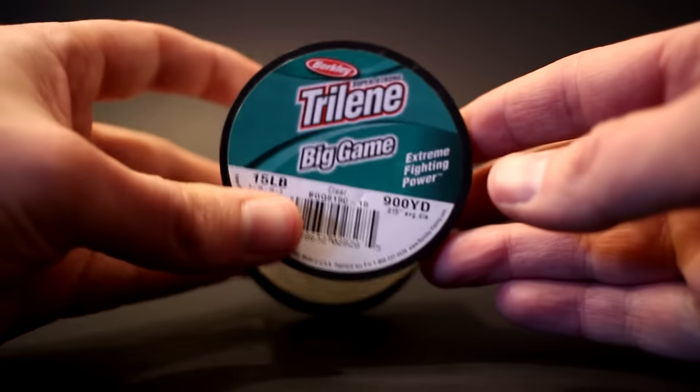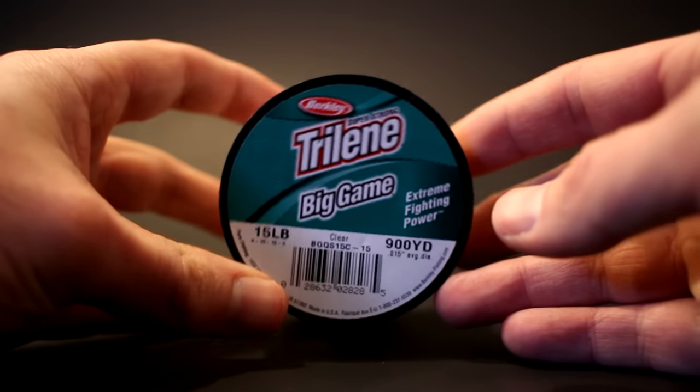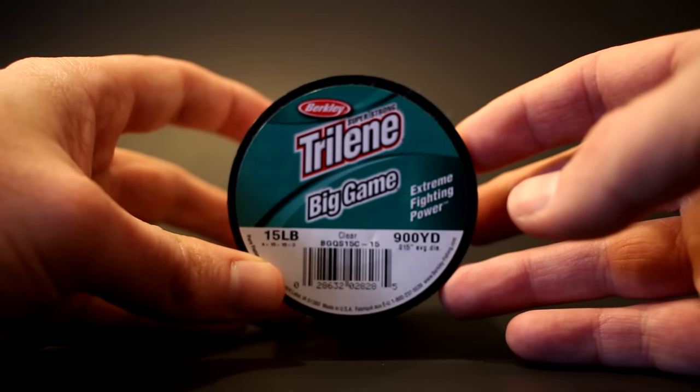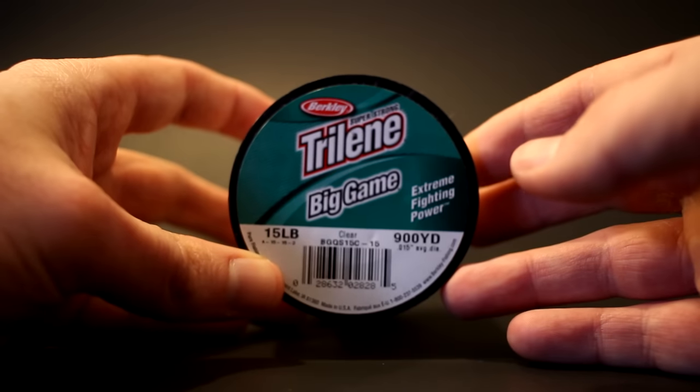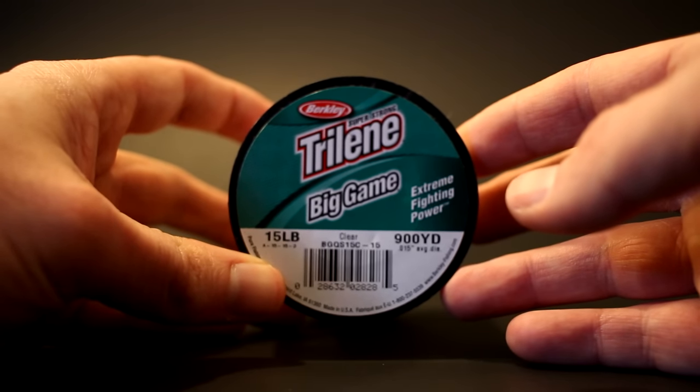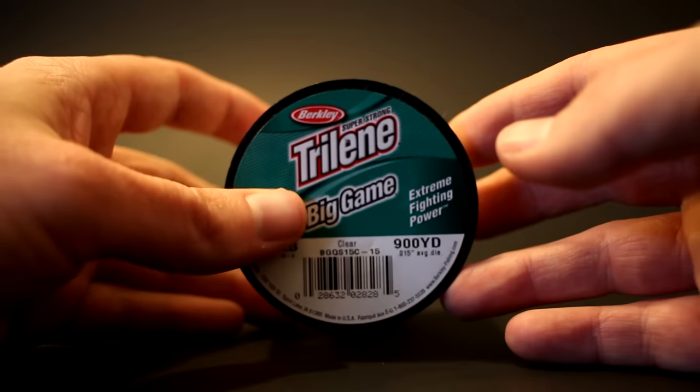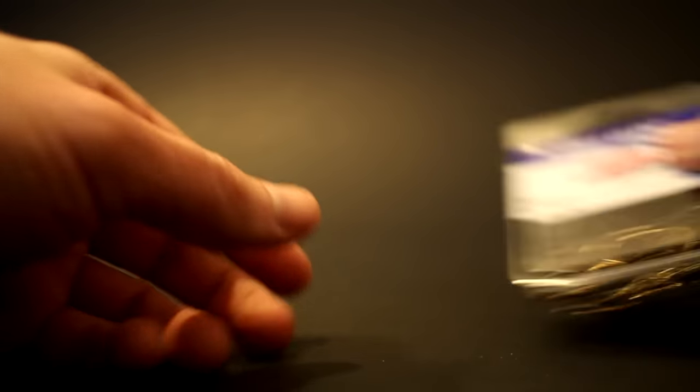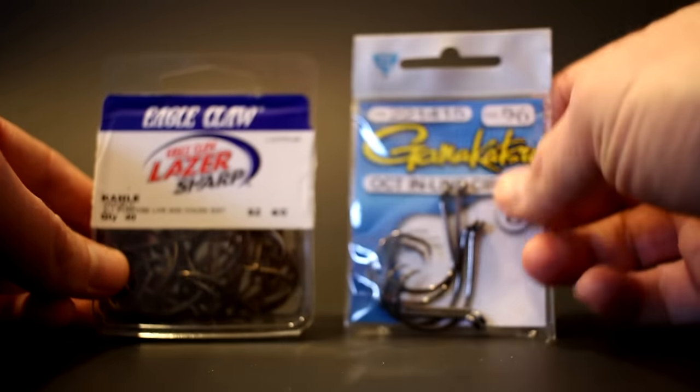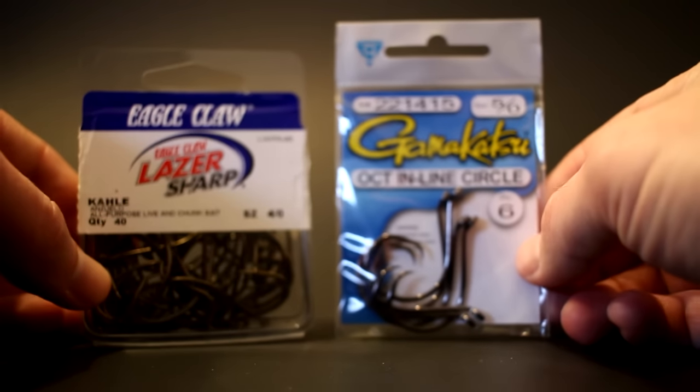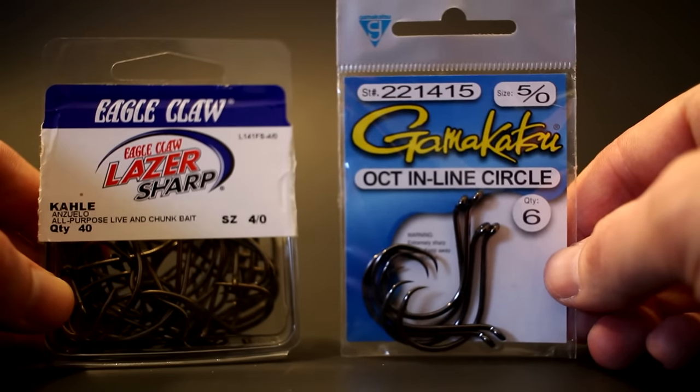All these are readily available at any store like Walmart, your sporting goods stores and whatnot. Probably the most popular line everybody has heard of or have used at one point is your Berkley Trilene Big Game using 15 pound test. Again, you can use whichever line you prefer. As far as hooks go, these are mainly catfish hooks but I'm using Eagle Claw Laser Sharp Kahle hooks or you can use your Gamakatsu Octopus circle hooks.